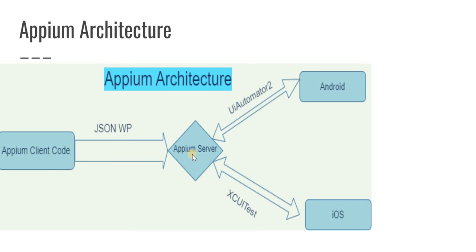When your client code is transferred to the Appium server, it will be wrapped in JSON format, because Appium always accepts and expects JSON format code. That's why Appium can accept different types of code — it doesn't matter if you write in Java or Python, since JSON is a neutral format that can take any type of code. Your code is converted to JSON format and transferred through the JSON wire protocol to the Appium server, which then interprets and executes your code line by line.